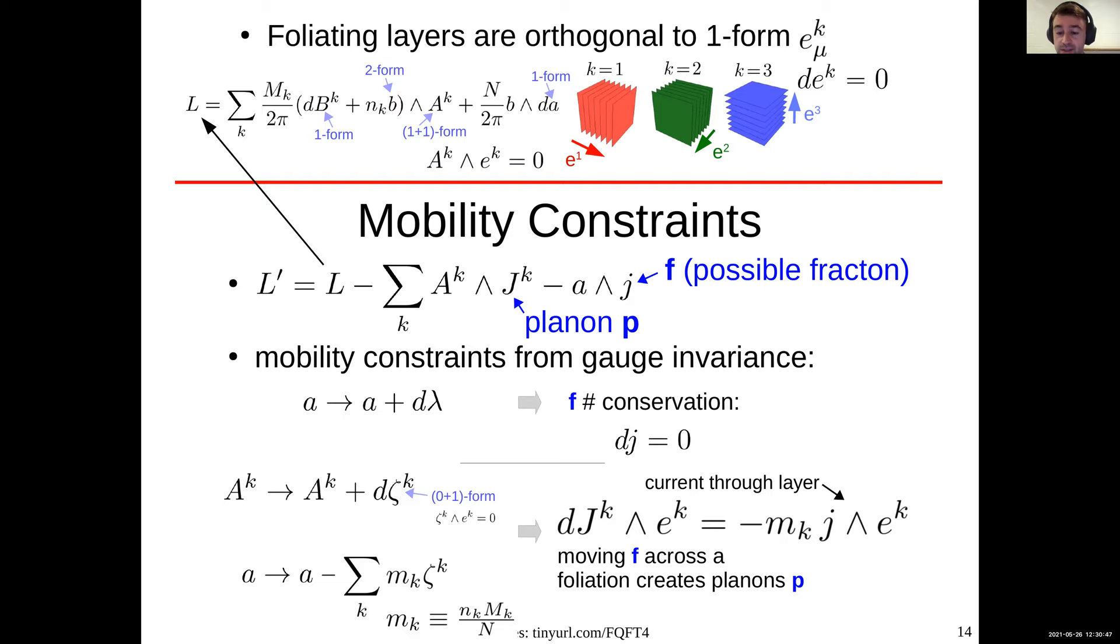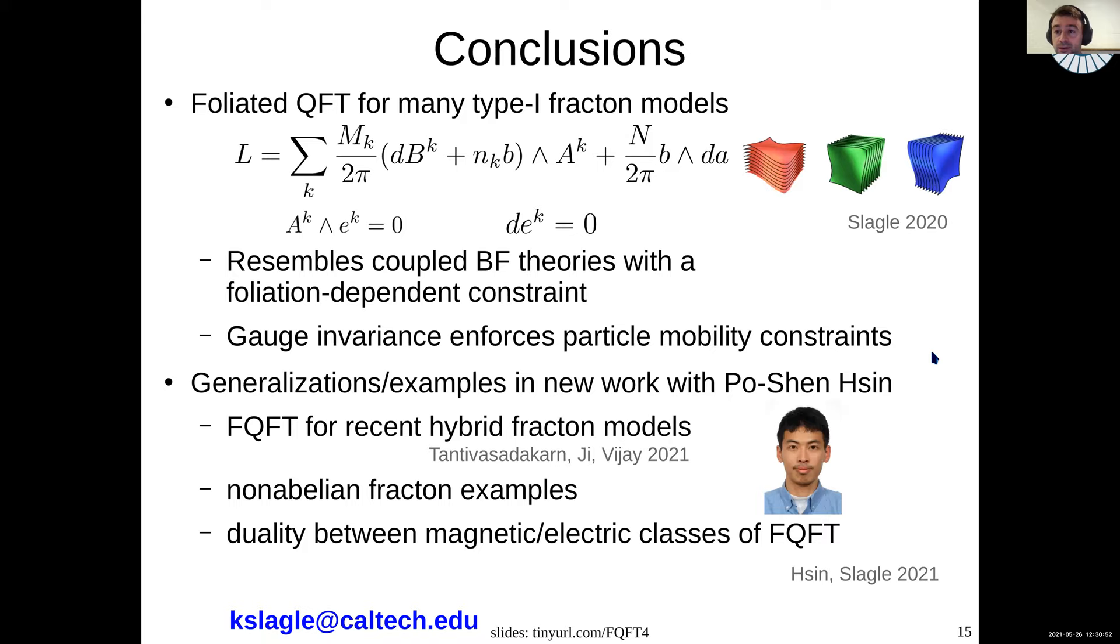We see that we reproduce the basic physics of the X-cube fracton models and other fracton models using this foliated QFT, which looks like coupled BF theories. We describe the space-time structure using this foliation field little e through a constraint on big A, a foliated 1+1 form gauge field. And this little e just had to obey a constraint that had to be closed. And we saw that gauge invariance enforces the particle mobility constraints.